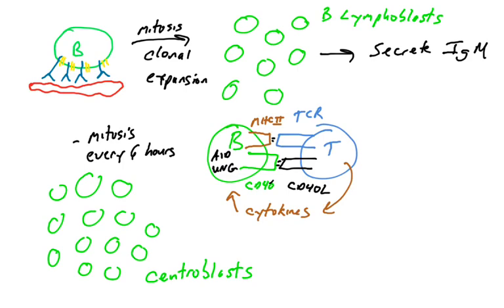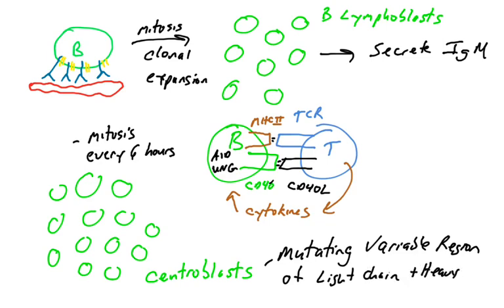Some of them are secreting IgM. Some of them are undergoing somatic hypermutation and we're going to select which ones are good. The process of somatic hypermutation and affinity maturation involves the enzymes AID and UNG. Those enzymes are going to the variable region of the heavy and light chain genes and they are randomly choosing cytosines, and AID is deaminating the cytosines, converting it to uracil.